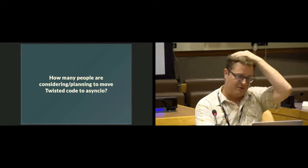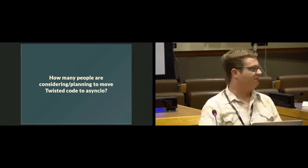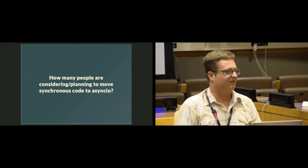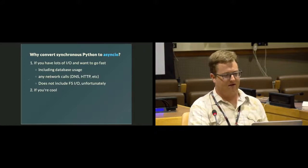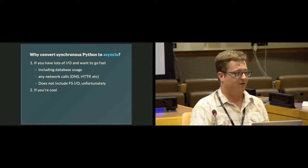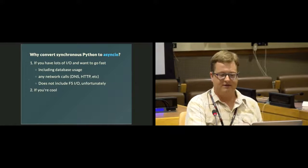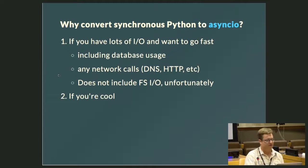Conversion time. How many people are considering or planning to move Twisted code to asyncIO? And how many are considering moving synchronous code to asyncIO? So why convert synchronous Python to asyncIO? Well, if you have lots of I/O and you want to go fast — this includes database reads and writes over a network or socket, any sort of networking calls like DNS lookups, HTTP client or server side. Unfortunately this does not include file system I/O for some rather boring technical reasons — the reactor loops and multiplexing libraries can't support it. Also, if you're cool, because async is fun.